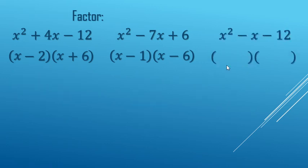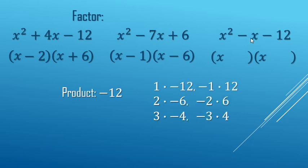This example here, the firsts are x and x, the lasts multiply to a negative 12, and add to a negative 1. So 3 and negative 4, multiply to negative 12, add to a negative 1, x plus 3, x minus 4.